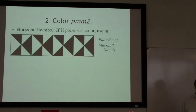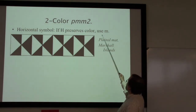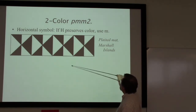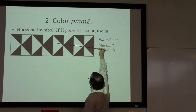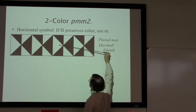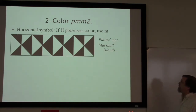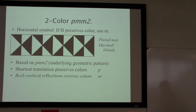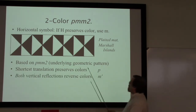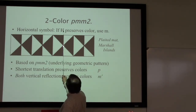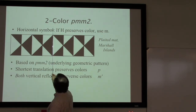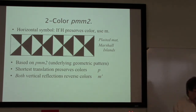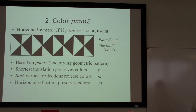This first example is decided by the first part of the rule: if h preserves color we use m. This is a 2pmm2 and the horizontal reflection here preserves colors — the black comes all the way down to black, the top part of the white triangle goes to the bottom part of the white triangle. The shortest translation preserves colors so we put a p without a prime. Both vertical reflections reverse colors, so we put m prime. The horizontal reflection preserves so it gets an m.